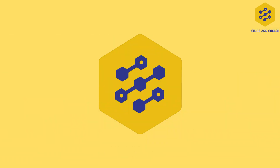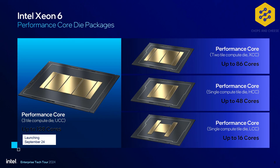So Xeon 6 — let's look at the lineup. There are essentially four what were known as dies: the UCC, XCC, HCC, and LCC versions. To dive into that a little bit more: UCC, or Ultra Core Count SKUs — this is what was known as Granite Rapids AP.